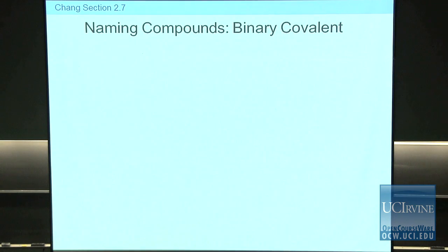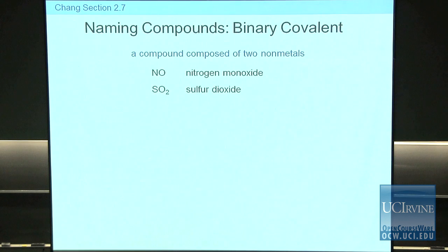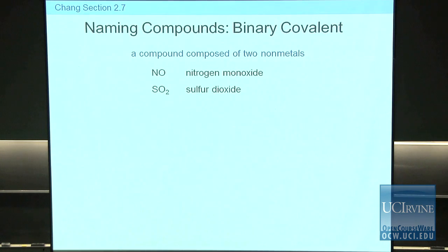Now let's move on to another type of compound — not ionic, but covalent: binary covalent compounds, meaning two types of non-metal elements make up this compound, and they are covalently bonded. Here are two examples. This is nitrogen monoxide — it is a covalent compound; neither of these elements is metallic. This is sulfur dioxide — also a covalent compound. How do you determine the name of these binary covalent compounds?